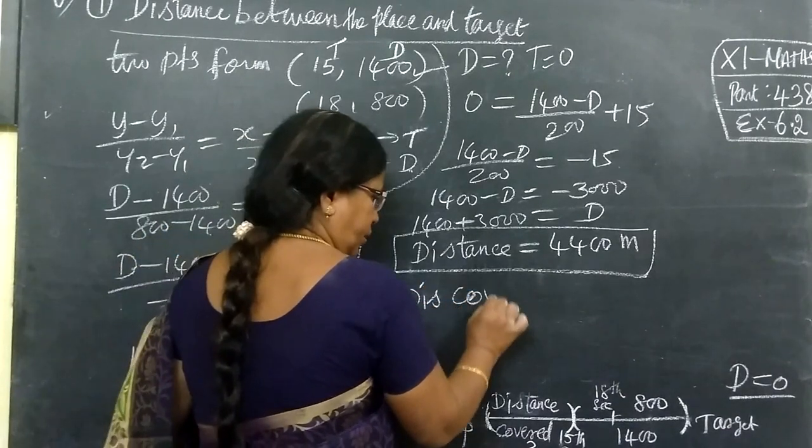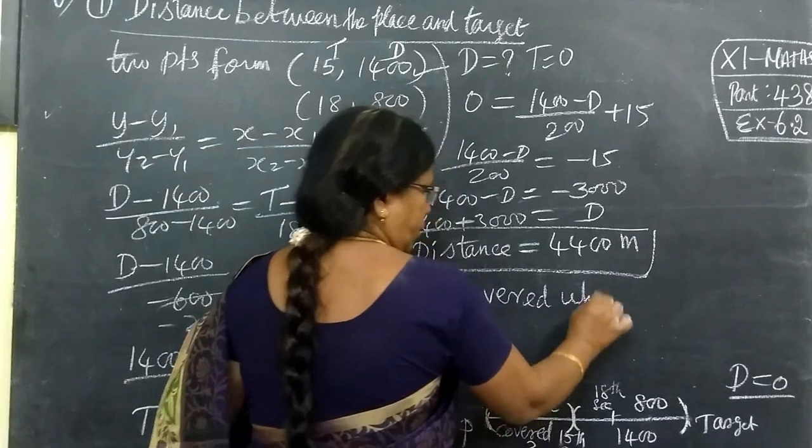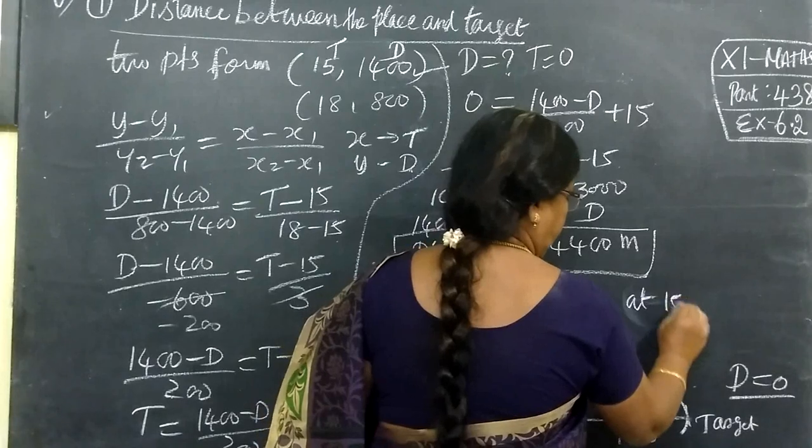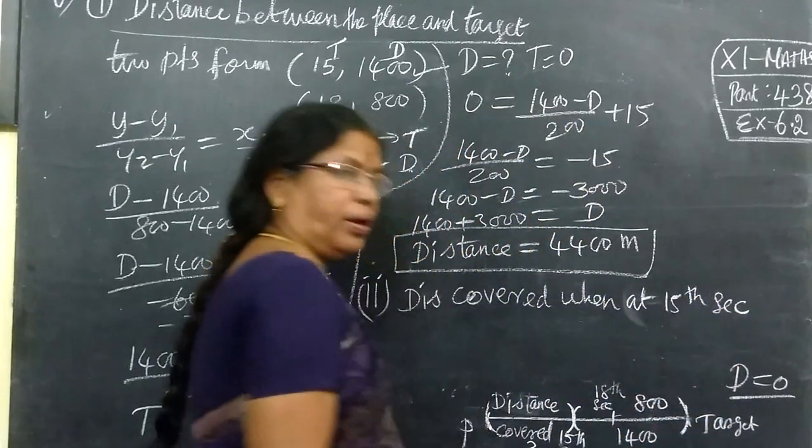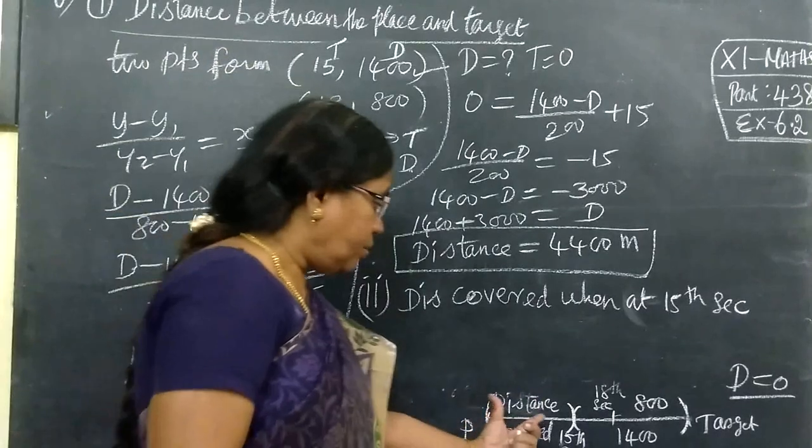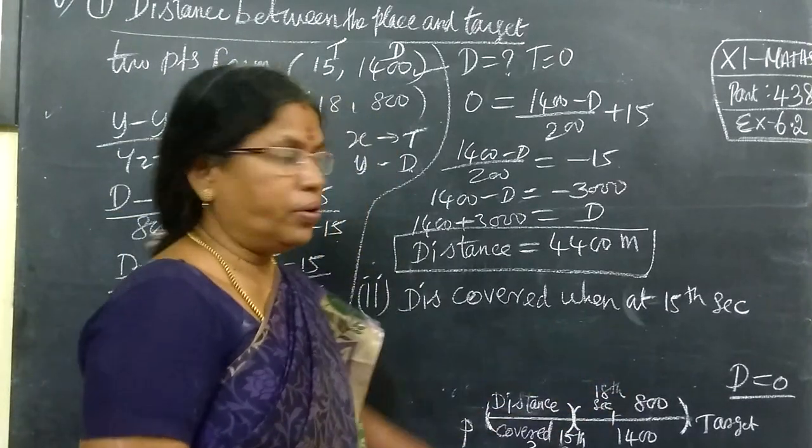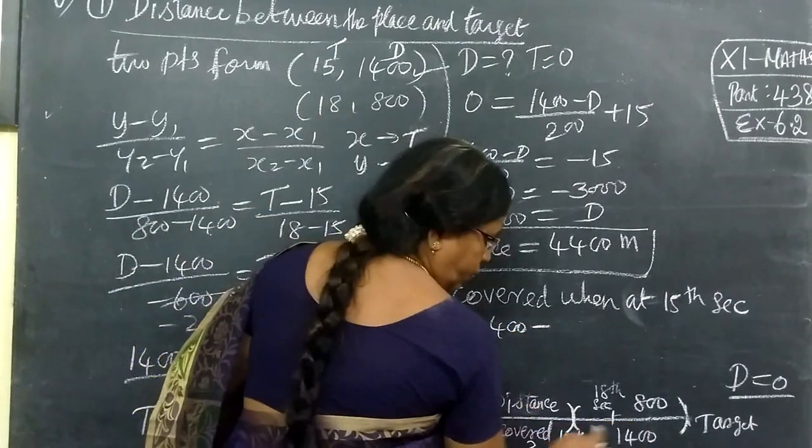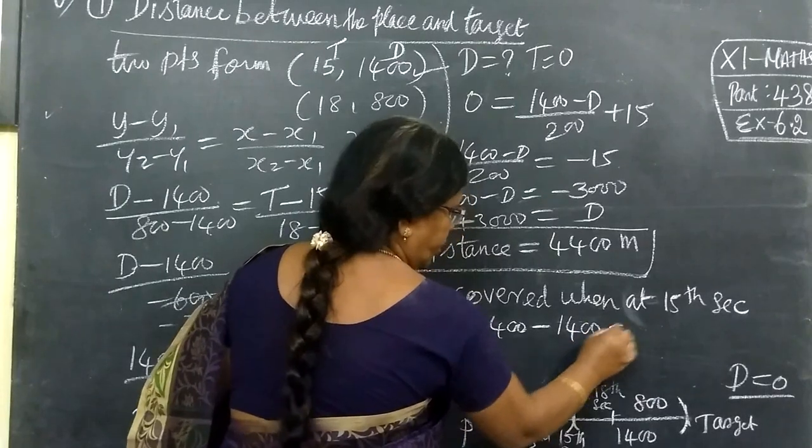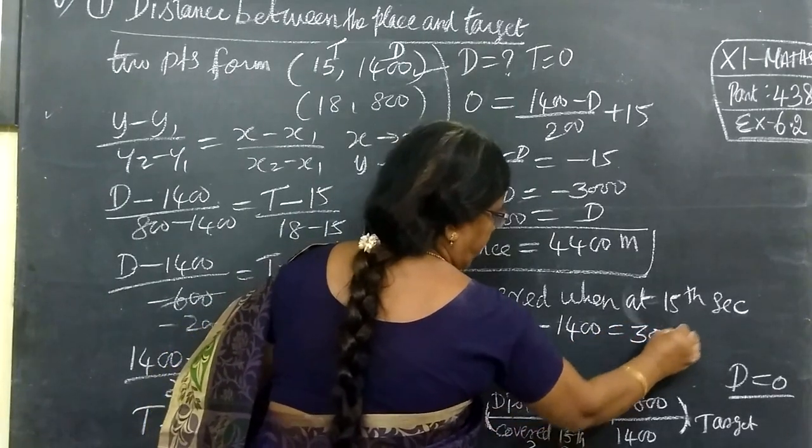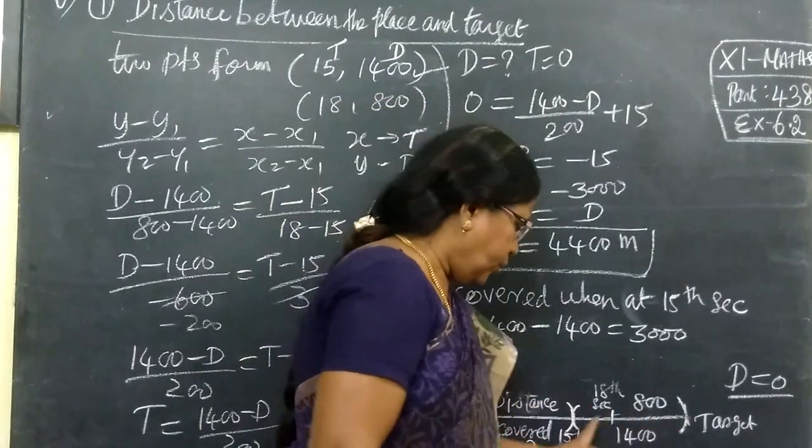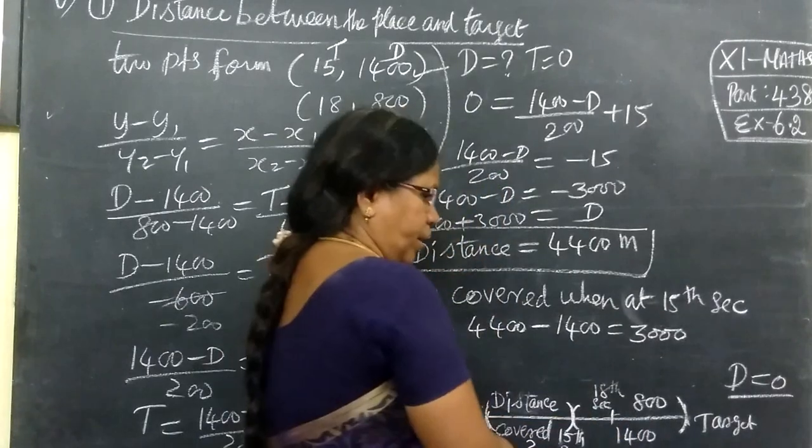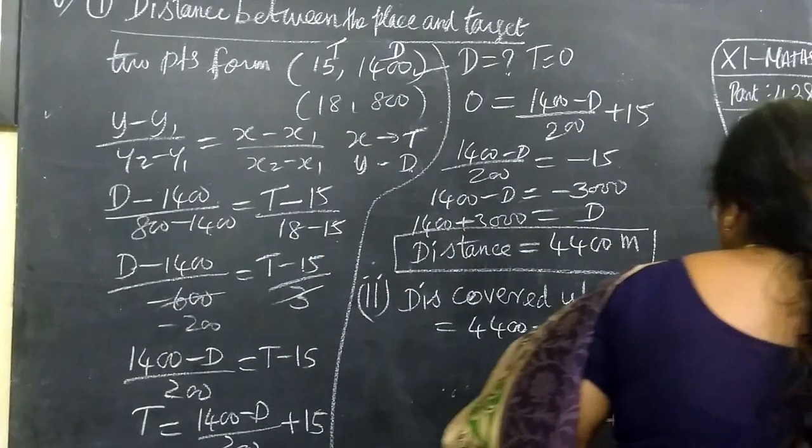Distance covered when time equals 15 seconds. The distance covered is 3000 meters.